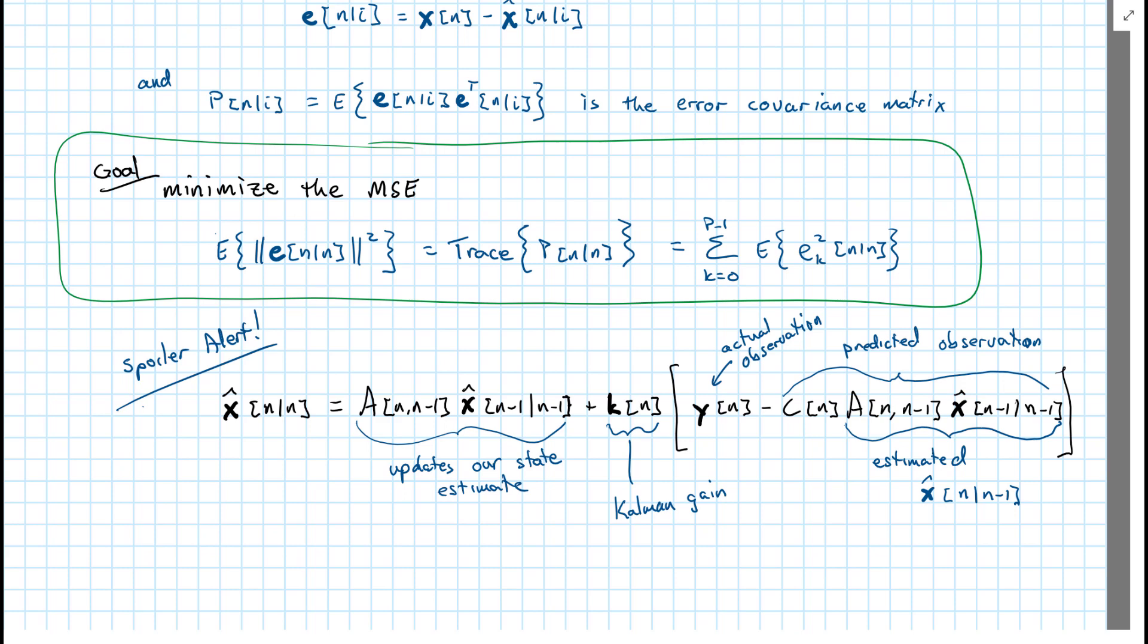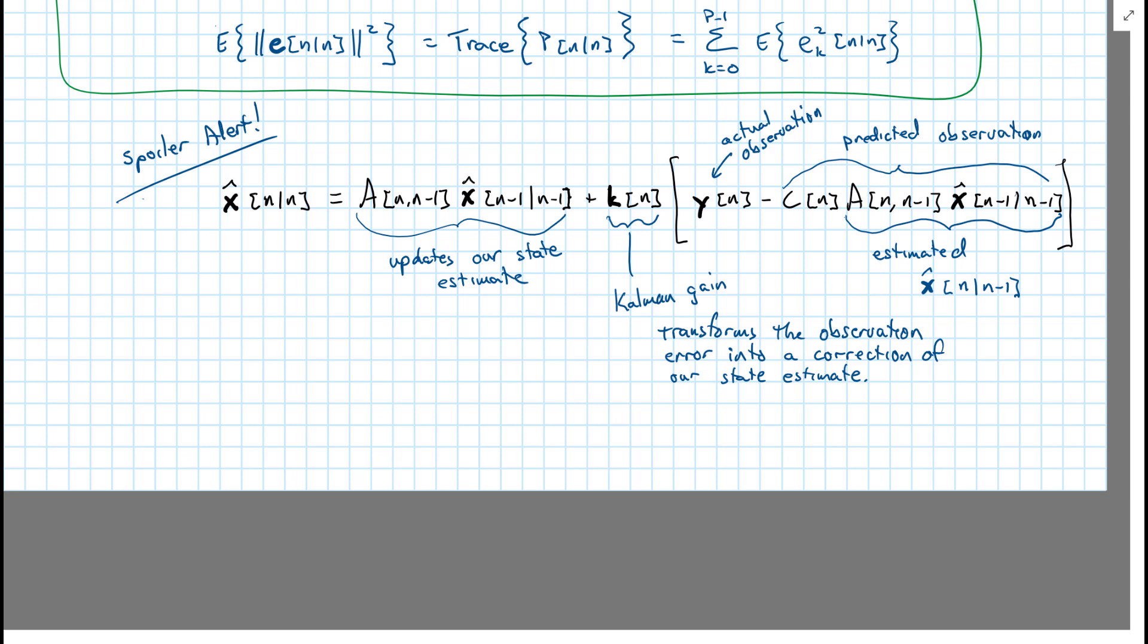It has a role similar to the mu that we've used before in our adaptive filter updates. But the Kalman gain is actually not a scalar. And it's doing something slightly different. But we'll get there as we go.